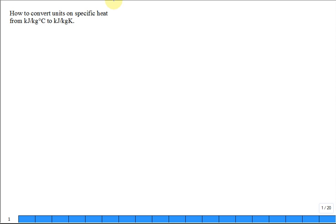Here's the problem. You're asked to convert the specific heat of air at constant pressure. Maybe they give it to you as 1.005 kilojoules per kilogram degree C, but you really need it in kilojoules per kilogram Kelvin. You're stuck. How do you do that?